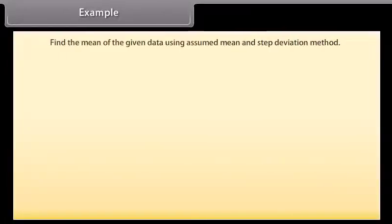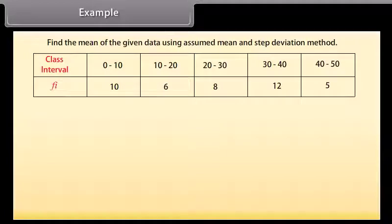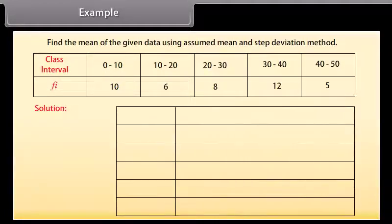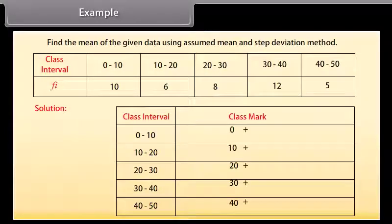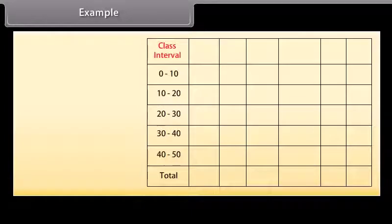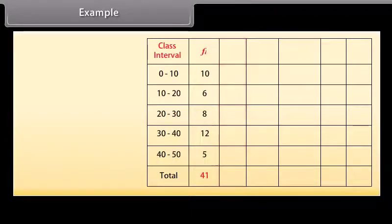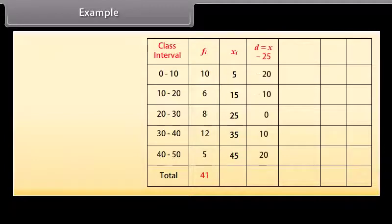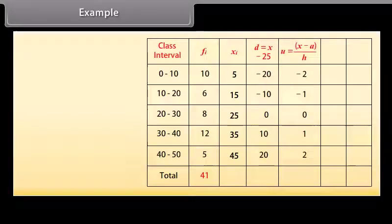Example: Find the mean of the given data using assumed mean and step deviation method. Solution: First we find the class mark for each class interval using: class mark equals (upper class limit + lower class limit) divided by 2. Let assumed mean a equal 25 and h equal 10. The first column has the class interval and the second has the frequency. The sum of frequencies is 41. We write the class mark xi, then compute di as deviation from assumed mean, and ui as deviation divided by class size.